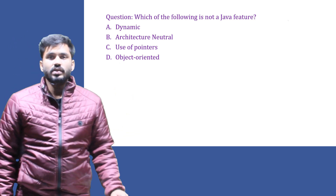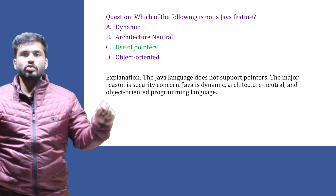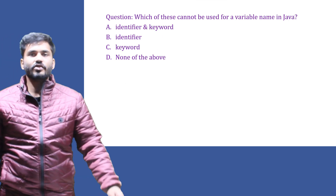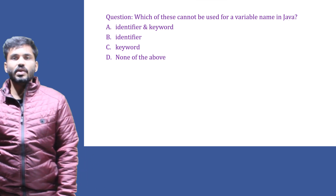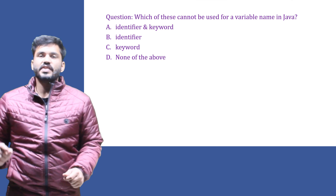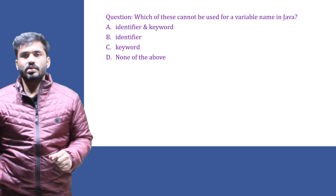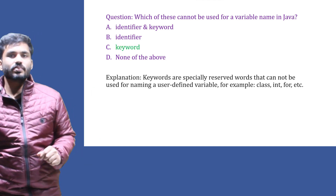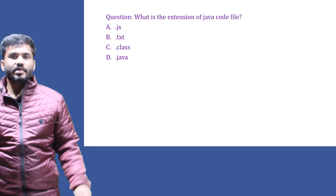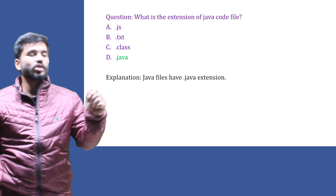Which of the following is not a Java feature? Java removed the use of pointers to provide security, so the answer is pointers. Which of these cannot be used as a variable name in Java? Keywords are reserved words with special meaning to the compiler, so we cannot name variables as keywords — the answer is keywords. What is the extension of a Java code file? We saved our file as classname.java, so the extension is .java.